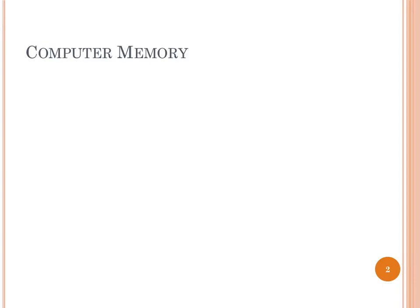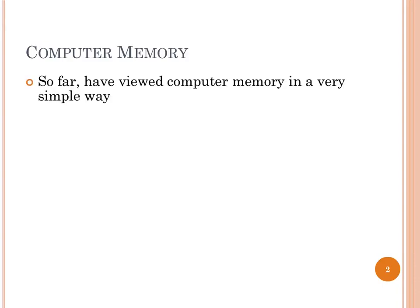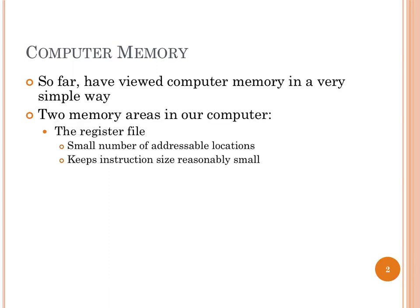We've been using computer memories all term so far, and we've had a pretty simple perspective. We say, I have addresses, and that'll get me back a byte, and I do stuff with it, save that value back to that address if I want to. We have the register file, which we know is small. Why did we want it to be small? So that we could keep our instructions from becoming enormous.